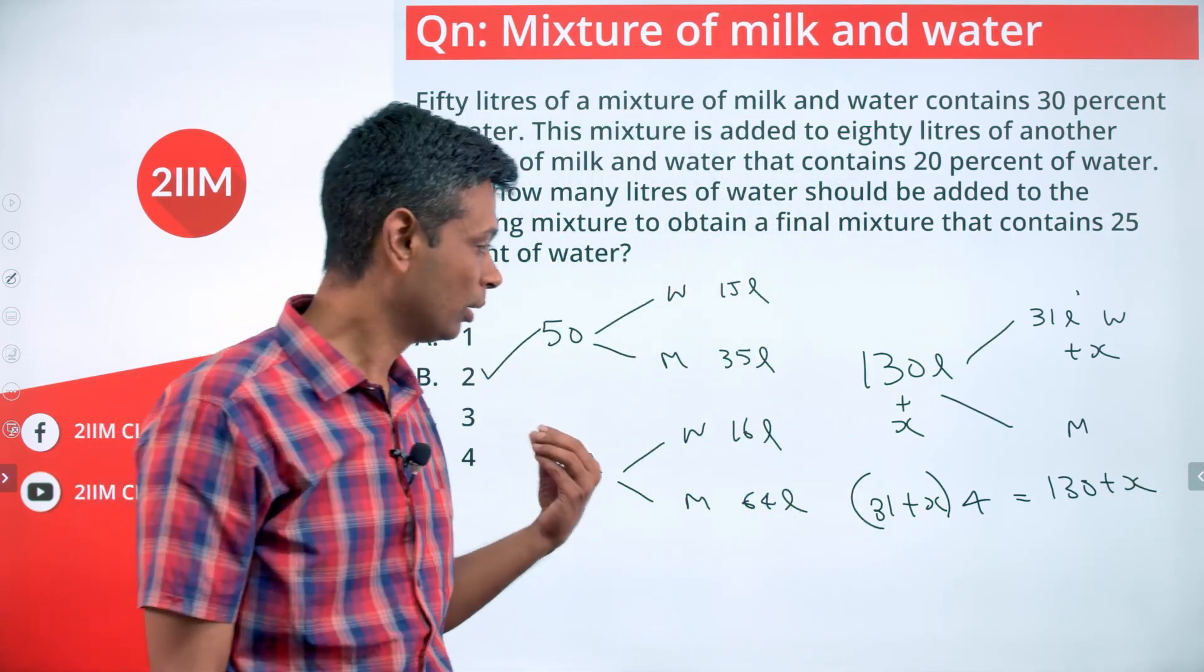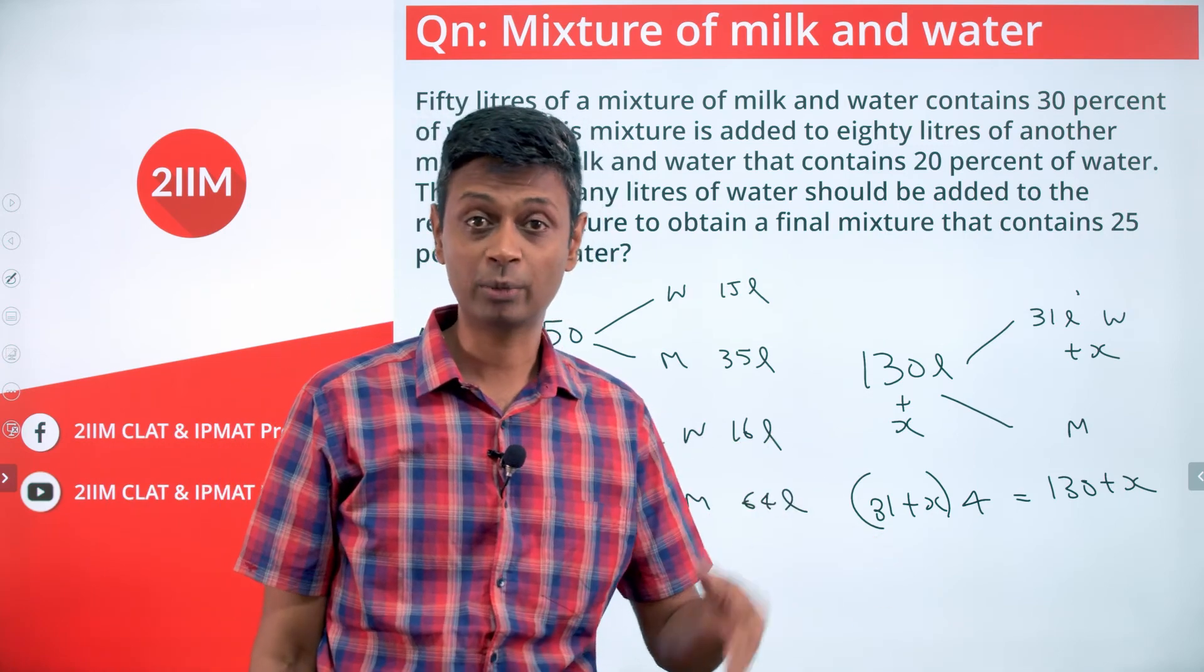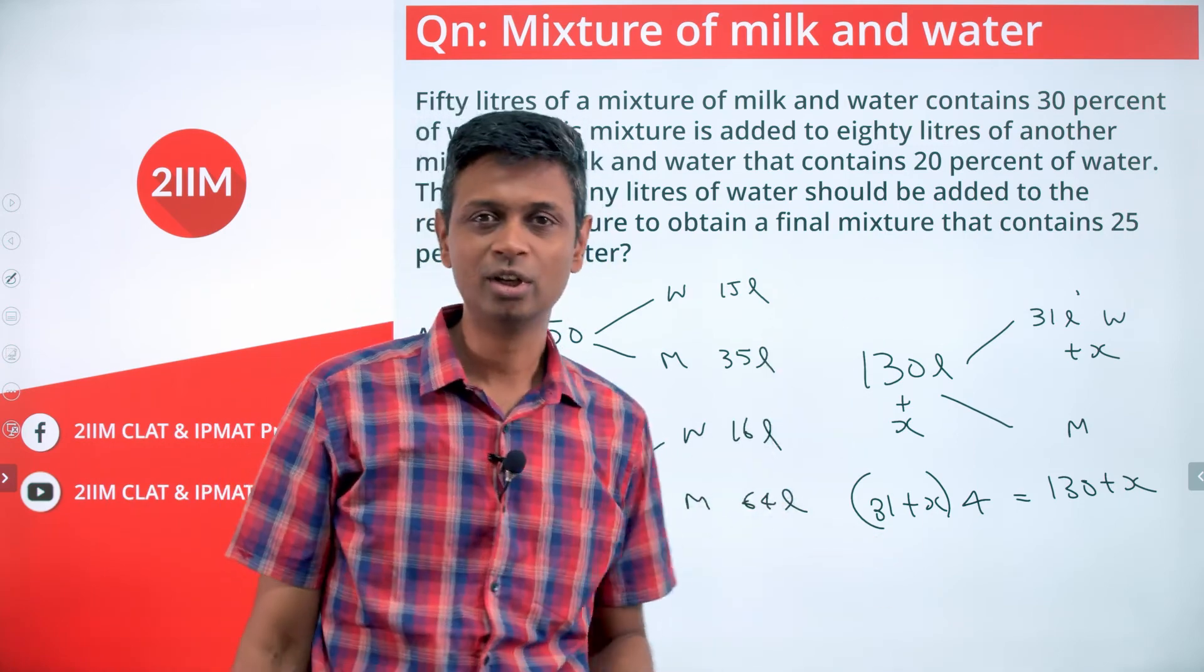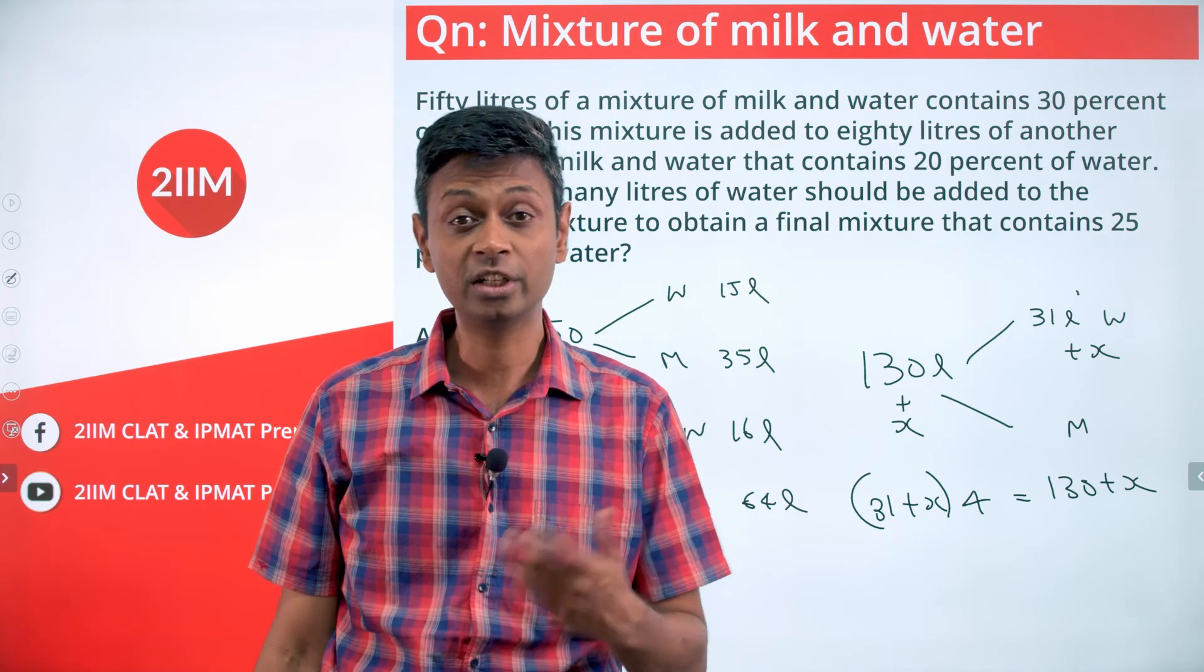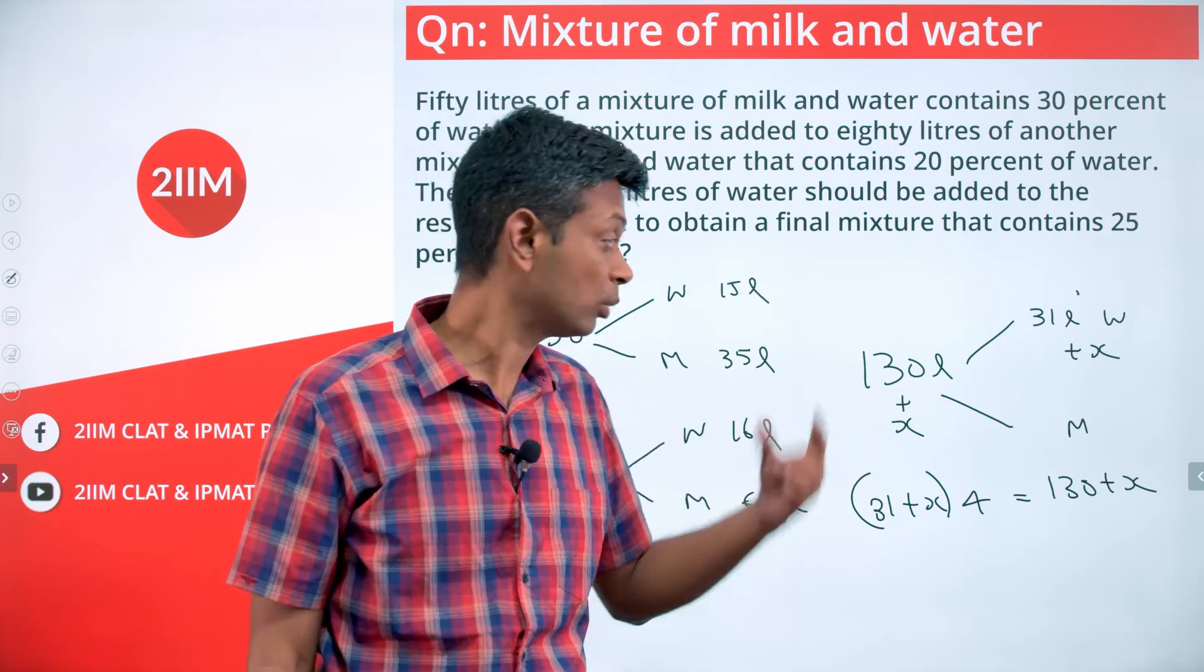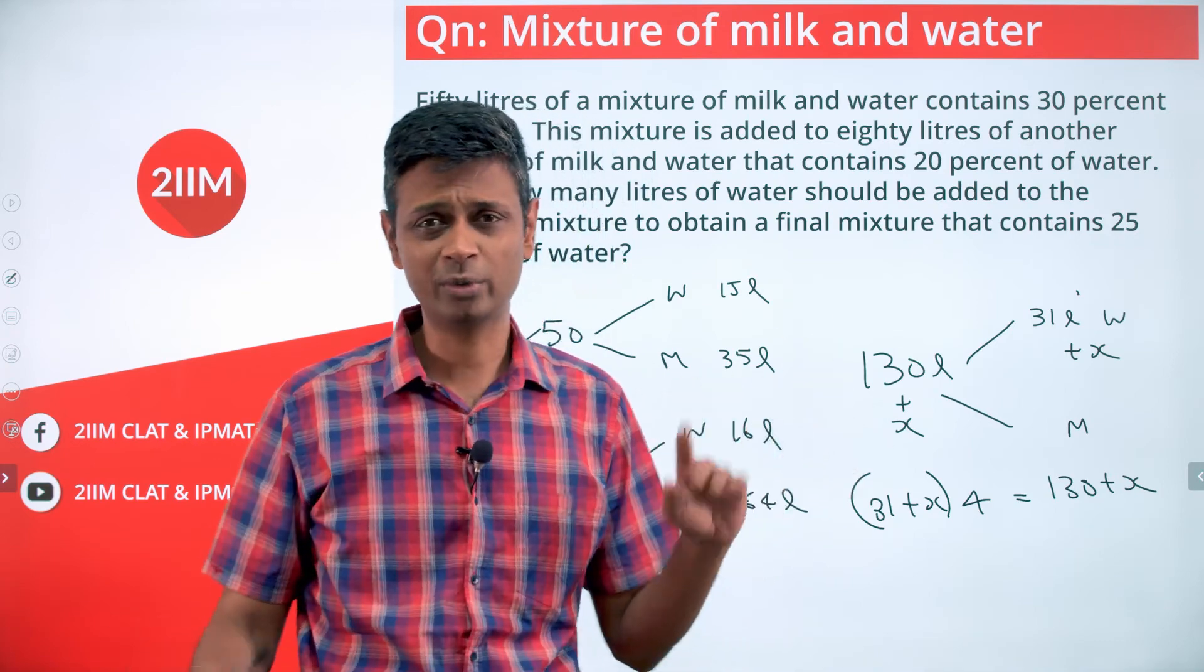That's a more methodical, simpler algebraic way of doing it, but you can just scan the numbers. To 31 you add 2, you get 33, 33 into 4 is 132 which is nothing but 130 plus 2. A very routine question.